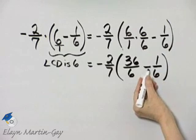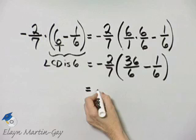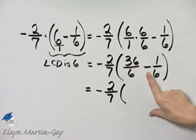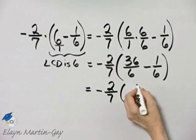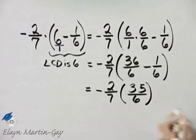Now again I'm subtracting, but the denominators are the same. Now I can actually subtract. So that's negative 2/7 times numerator minus numerator. 36 minus 1 is 35 over 6.